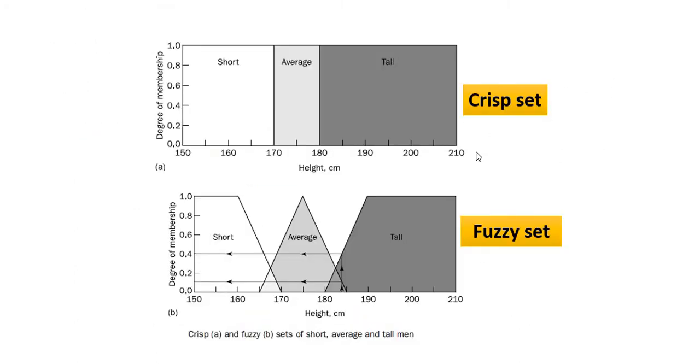It shows crisp set and fuzzy set. We can see the set of short, average and tall men. For crisp set, we have very fine boundaries. If it is 169, it is considered short. If 170 or 171, it is considered average. This is not very fair.